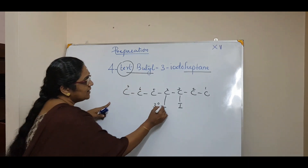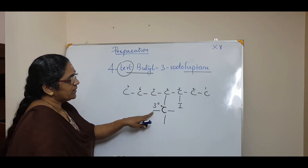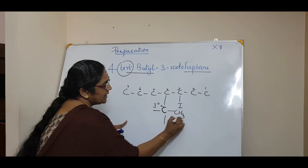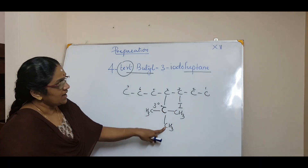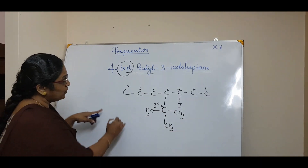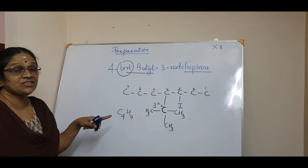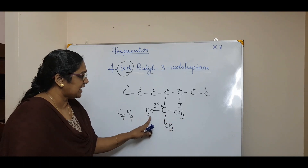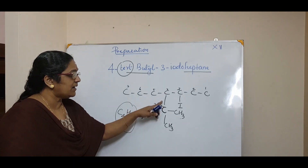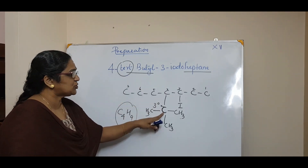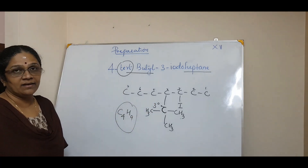Tert-butyl means the first carbon is attached to a tertiary carbon with 4 carbons total — that is C4H9. The tertiary carbon has 3 bonds to other carbons and 1 free valency. So this is 4-tert-butyl-3-iodoheptane. All other valencies should be satisfied.